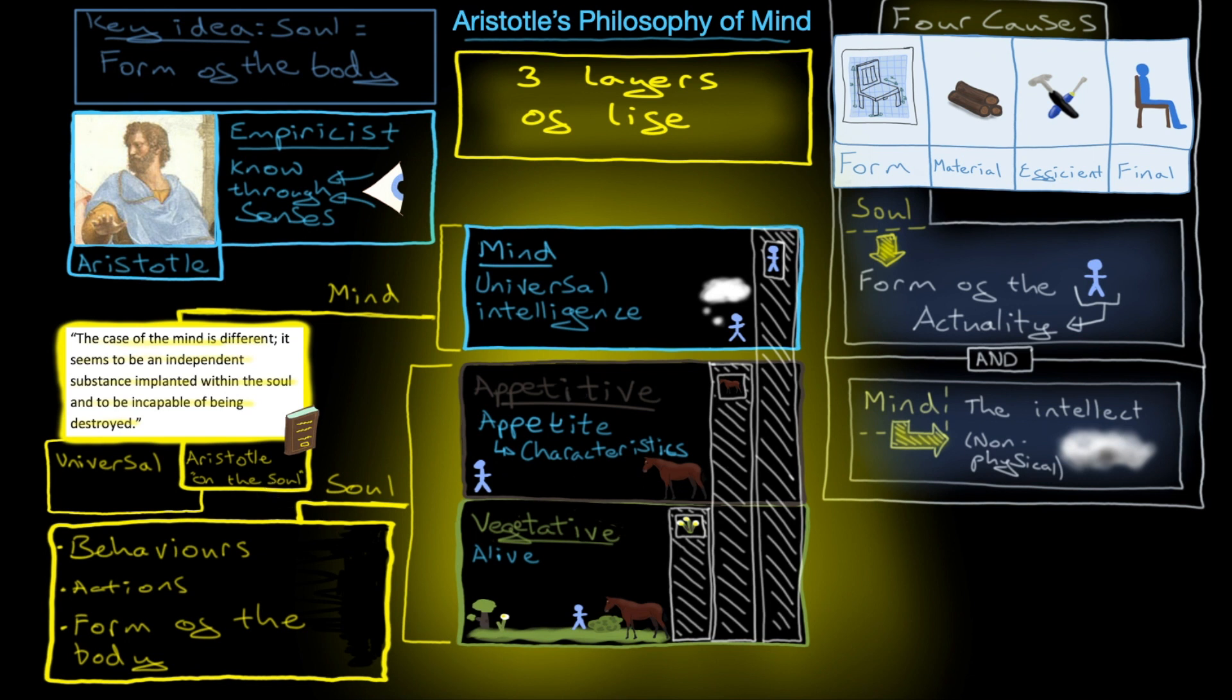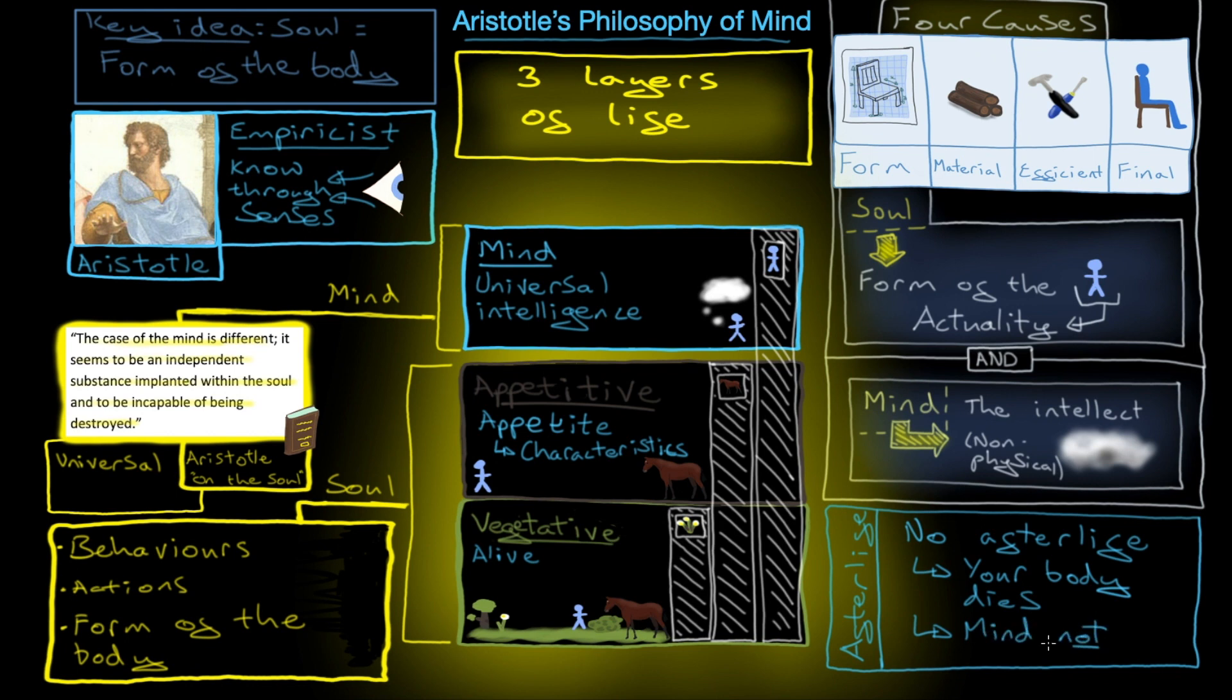Unlike the substance dualists like Plato and Descartes, he doesn't think that you are your mind. He rather thinks that mind is just this kind of academic logic application. That's why when we get to the concept of the afterlife, there's a very different view. For him, there is no afterlife because you are your body. Your body dies, and that's it. You're done. The mind is universal and not really you. Although the mind is incapable of being destroyed, it's not you. That's Aristotle's philosophy of mind.